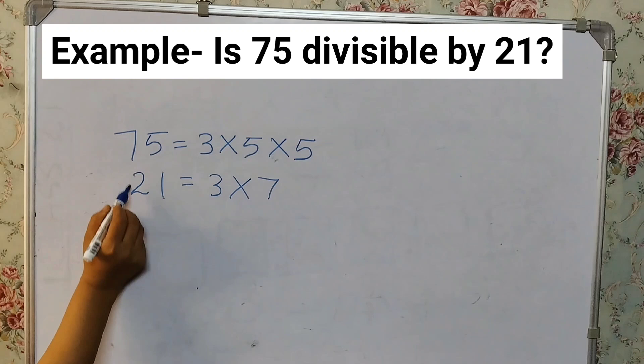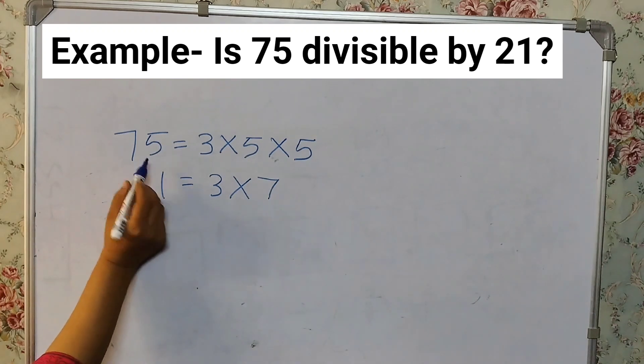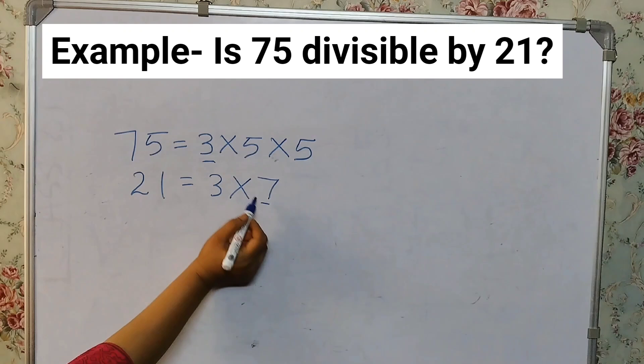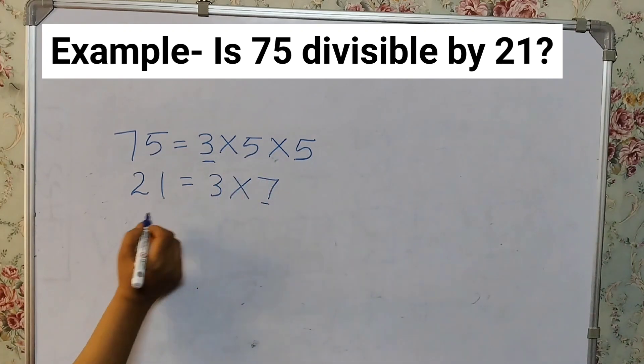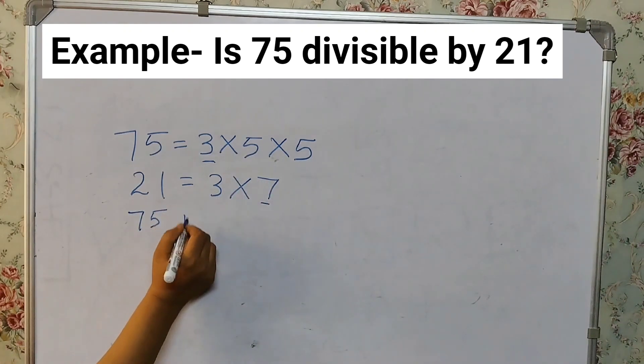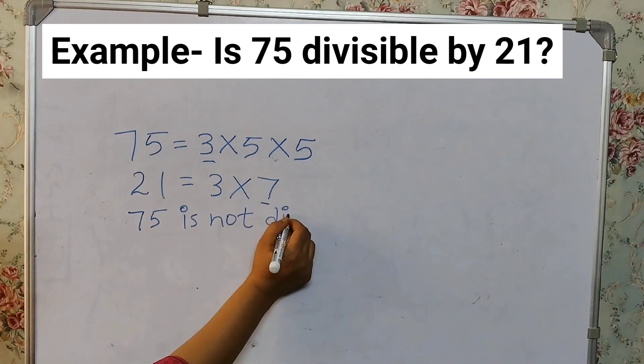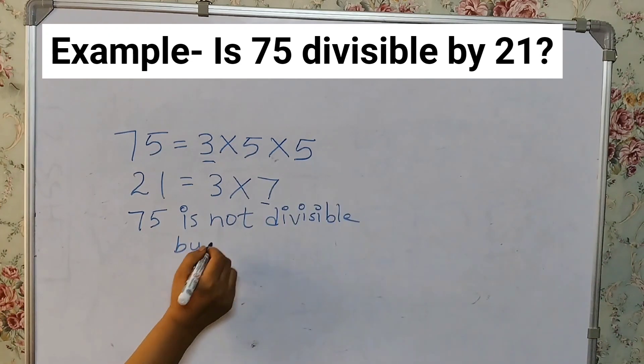Now, if this number has to be divisible by this, it should have all these factors. 3 is there but 7 is not there. That means 75 is not divisible by 21.